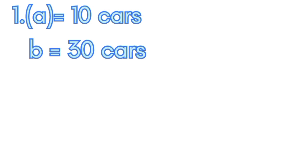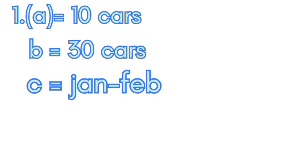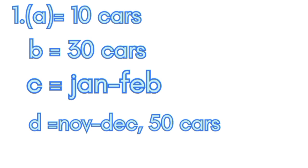Summary of answers: A is 10 cars, B is 30 cars, C is January-February, D is November-December with 50 cars.